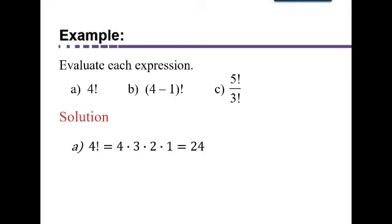Now, 4 minus 1 factorial, part b, remember we do what's inside the parentheses first. So first you subtract 4 minus 1 and get 3. So we're really looking for 3 factorial. 3 times 2 times 1 equals 6. And then for part c,